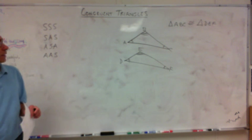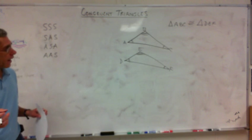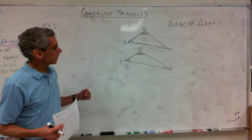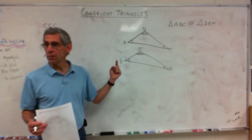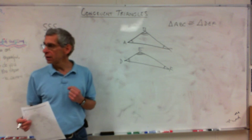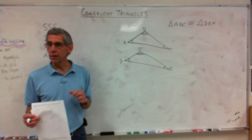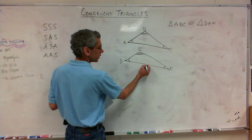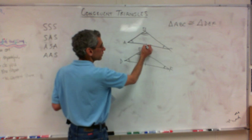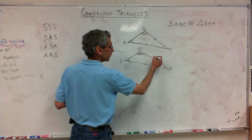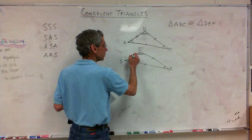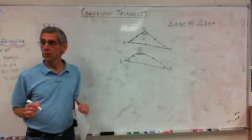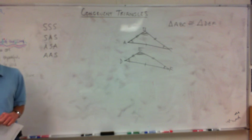Now, to know — let me ask: if I have all three sides the same length, will the triangles be congruent? If I said this side is equal to this, and this is equal to this, and this is equal to this — would they be congruent?